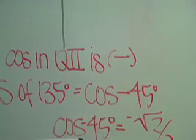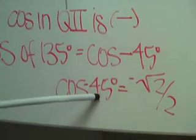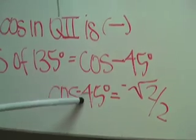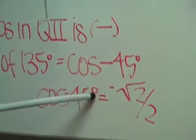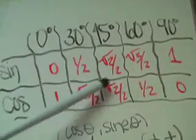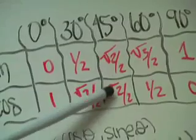We ignore the sign temporarily and find what cosine of 45 degrees is. Looking at the table, we see that cosine of 45 degrees equals square root of 2 over 2.